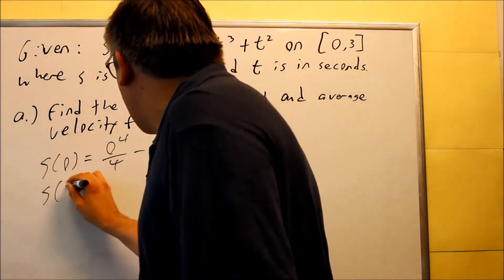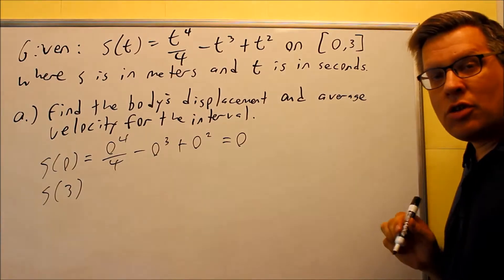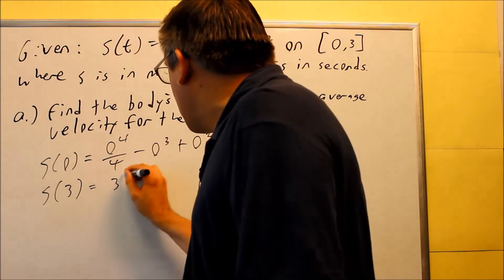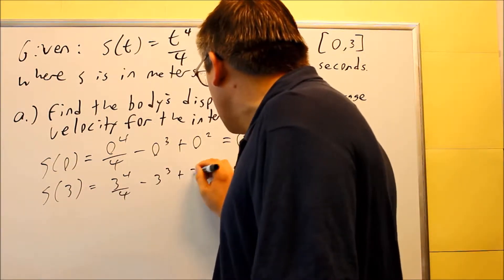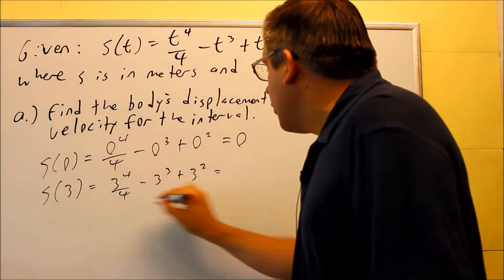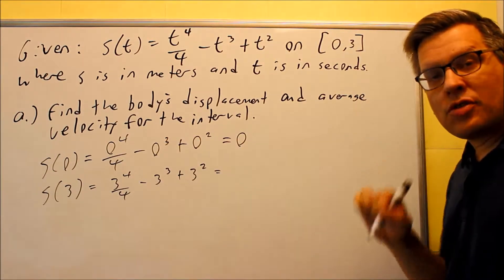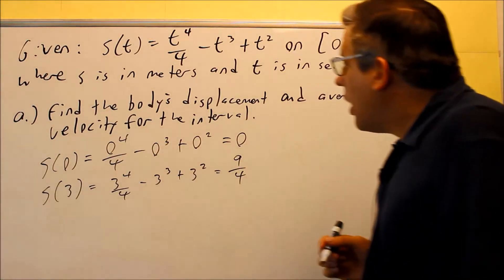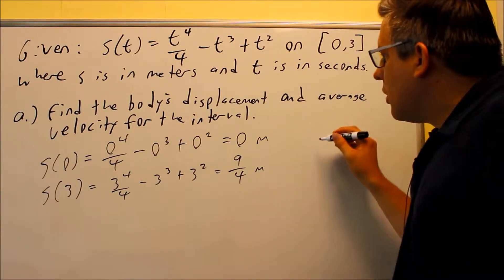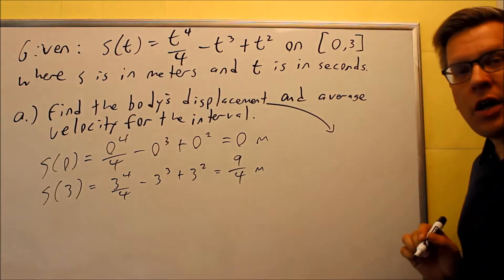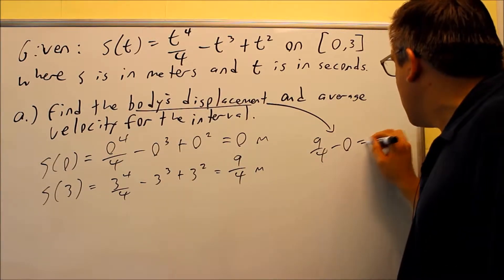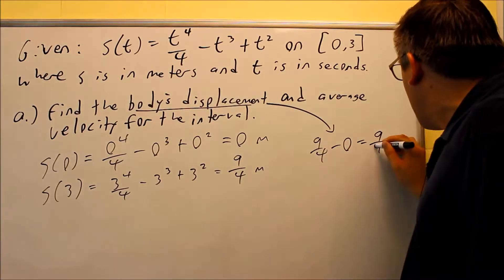Next, we're going to find s of three — find out where it is at the end of the time interval, and we'll subtract those to get the total displacement. So now we're going to put three in: three to the fourth over four, minus three cubed, plus three squared. If you do all this with common denominators, you're going to get nine fourths. These should both be in terms of meters. So the displacement, if they want the body's displacement, you're just going to take nine fourths minus zero.